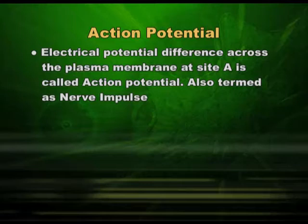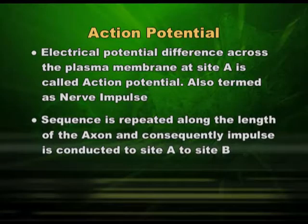Action potential means some action is taking place — changes in the gradient, changes in the electrical potential — and this happens when you apply a stimulus. So if a nerve impulse is passing through a nerve cell, it is a condition of action potential; action potential is another term for nerve impulse. This sequence is repeated along the length of the axon, from point A to B to C to D and so on, until the impulse reaches the other end.